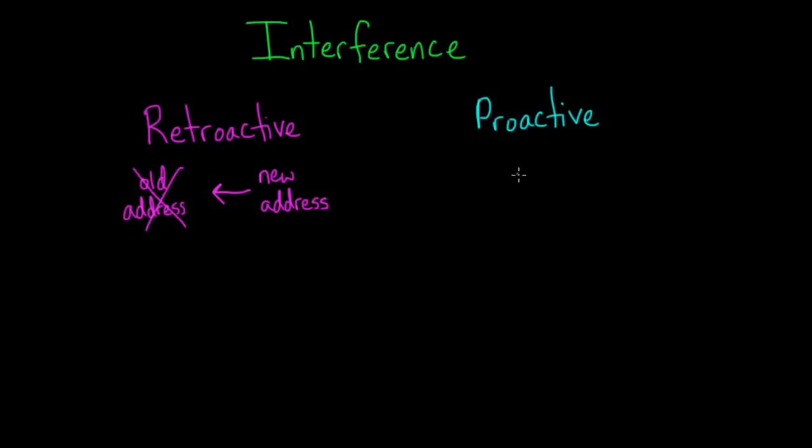Proactive interference, on the other hand, is interference acting forward. Something you learned in the past gets in the way of your ability to learn and retrieve something correctly in the future.